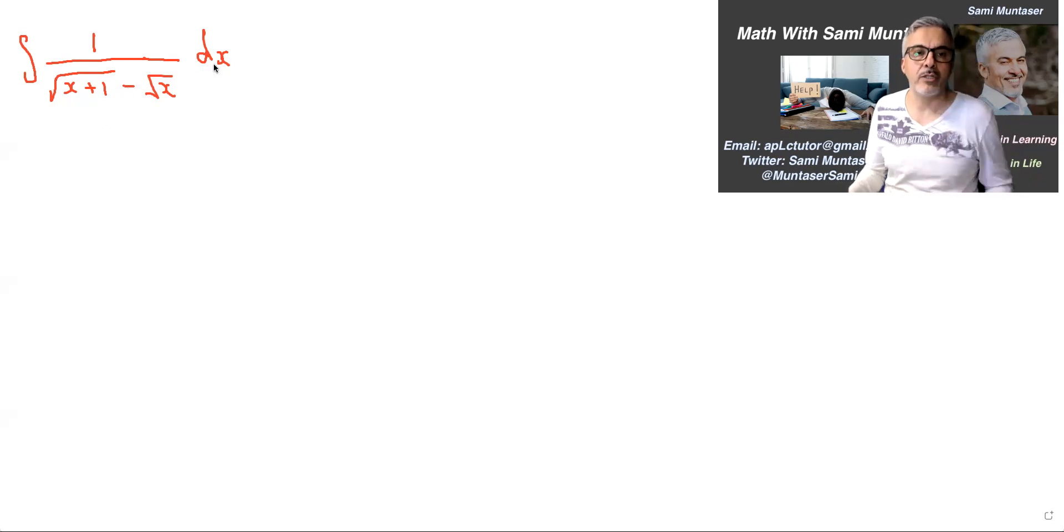It's a rational one. To make this simpler to integrate, we're going to multiply by the conjugate, which is x plus 1 plus root x, and whatever you do to the top, you do to the bottom.